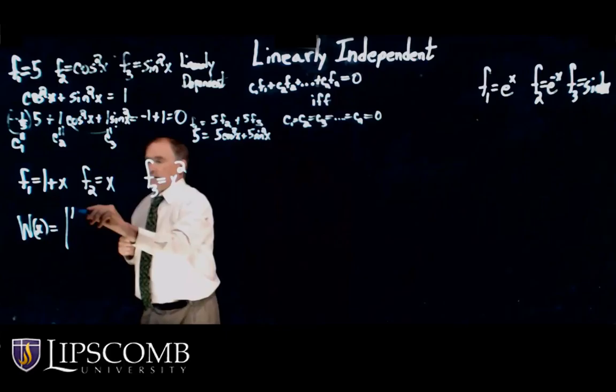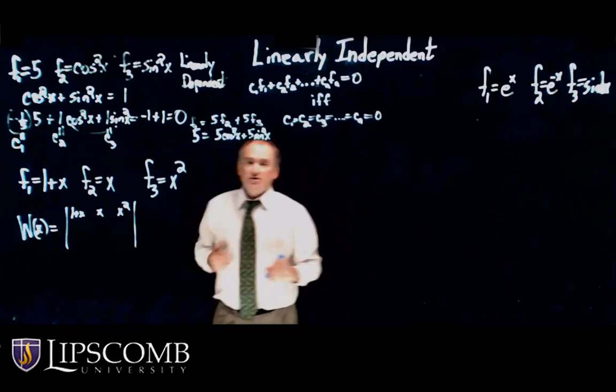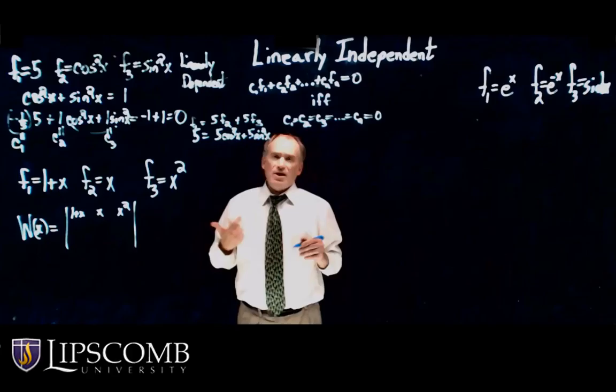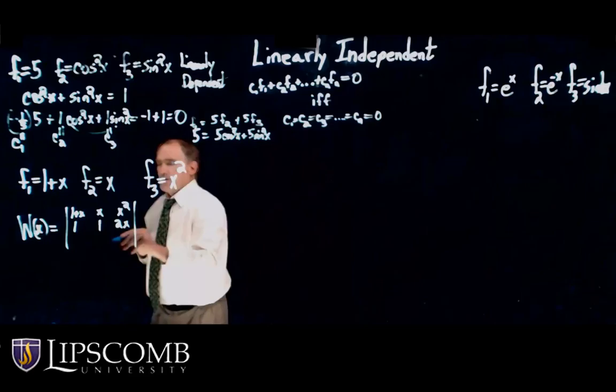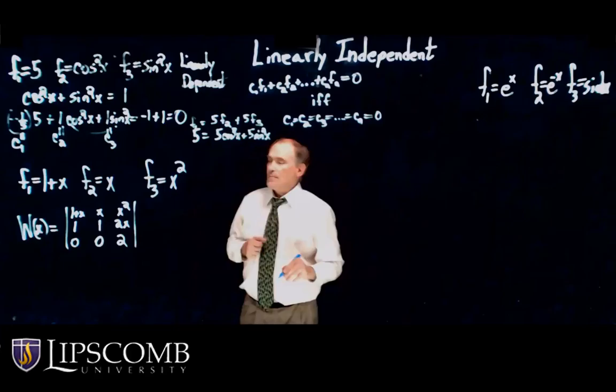So let's take the Wronskian. That would be the determinant: 1 plus x, x, x squared. And then, since I have 3, I'm going to take two derivatives, because I must have a 3 by 3. Because remember, determinants must be of a square matrix. So the derivative is 1, the derivative is 1, the derivative is 2x. The derivative is 0, the derivative is 0, the derivative is 2.